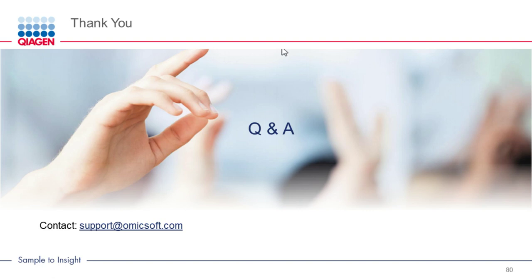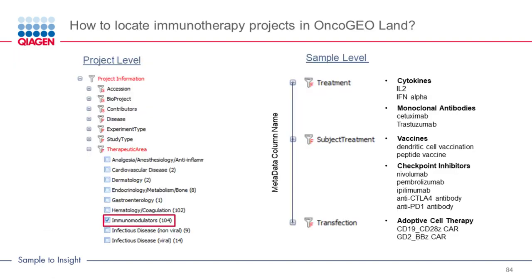Our first question is: how do you locate immunotherapy projects in OncoGeoLand? Currently in OncoGeoLand, most immunotherapy studies can be found under the therapeutic area at the project level. If you check the immunomodulator button, you can find the individual immunotherapy studies under three main categories: the columns of treatment, subject treatment, and transfection.